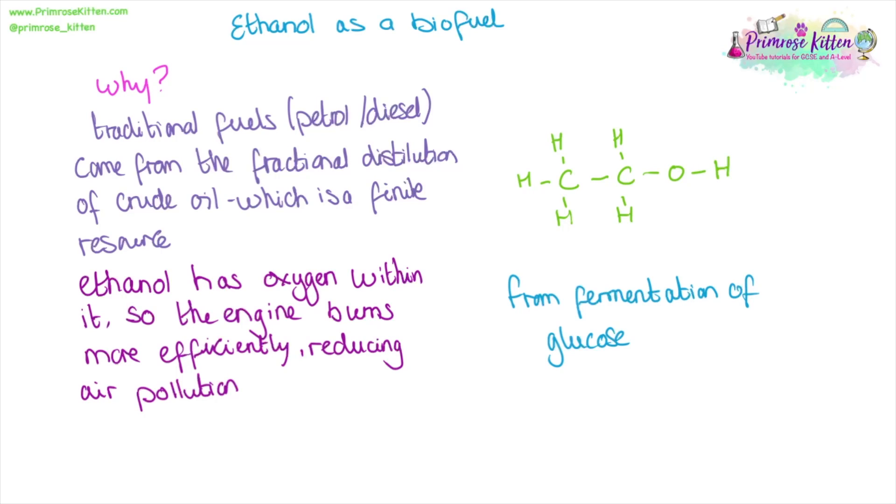Our formula for ethanol is C2H6O, and here it is drawn here. This ethanol we get from the fermentation of glucose from cane sugar.